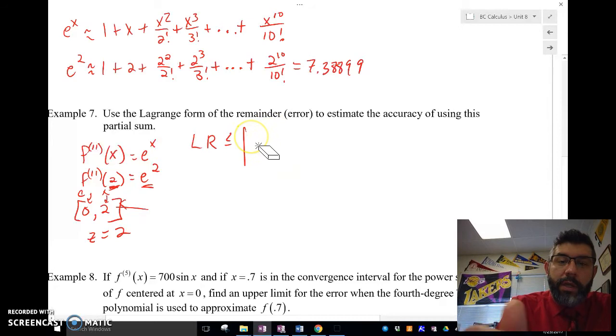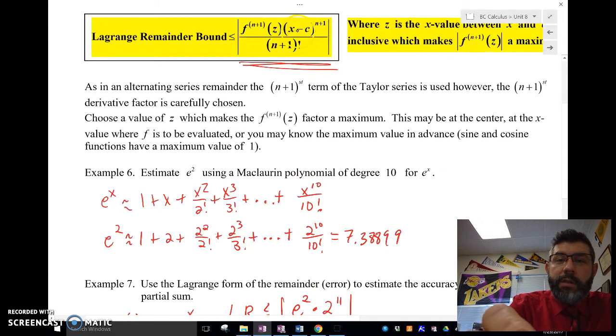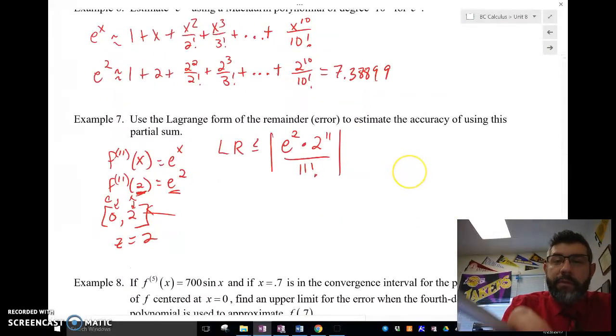So, that maximum value is going to be e squared times 2 to the 11th over 11 factorial. Now, just to remind you, that's the formula I have. x minus c, c is 0. x was 2 to the 11th over 11 factorial. This is the 11th term. So, we're just going to the next term. This is just the next term, guys. That's going to be 0.000379.